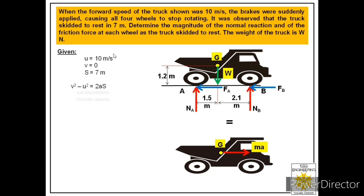From this data we calculate the acceleration of the truck using the equation v² − u² = 2as. Substituting final velocity = 0, initial velocity = 10 m/s, and distance = 7 meters, we get acceleration = −7.14 m/s². The negative sign indicates retardation, which makes sense since brakes are applied and the truck skids to rest.